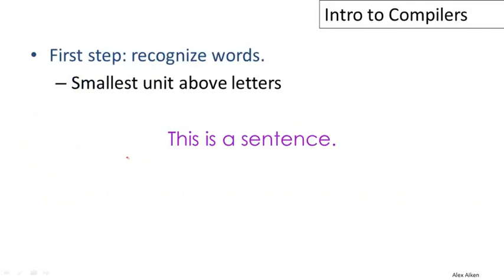The first step in understanding a program, both for a compiler and for a human, is to understand the words. Humans can look at this example sentence and immediately recognize that there are four words: this, is, a, and sense. This is so automatic that you don't even think about it, but there is real computation going on here.